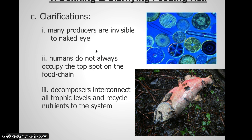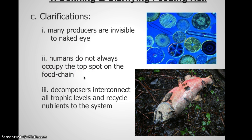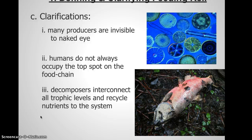A second clarification: humans do not always occupy the top spot in the food chain. Many humans across the world are actually herbivores. Occasionally, when they have the resources available, they might eat other herbivores — like we eat cows — or they might eat fish. Our trophic level varies widely depending on location. Also often forgotten is that decomposers really interconnect all the different trophic levels and are essential to ecosystems, recycling nutrients that are trapped in the tissues of organisms.